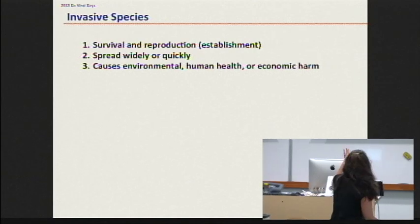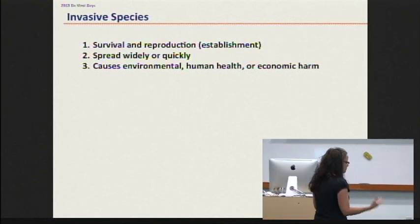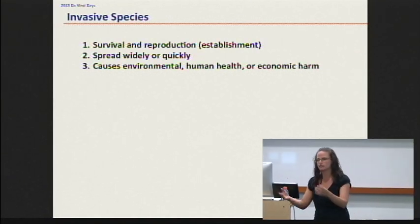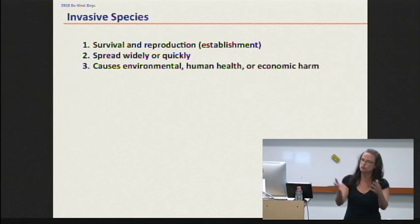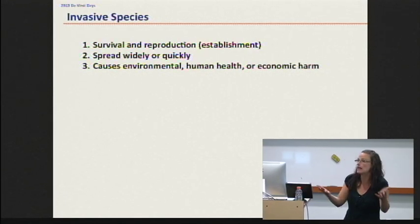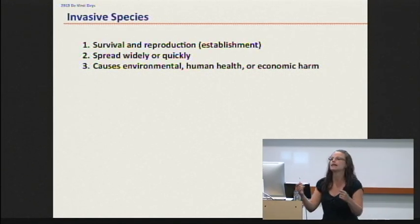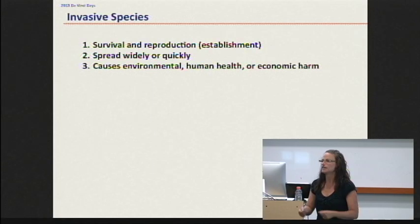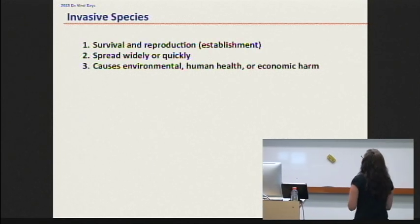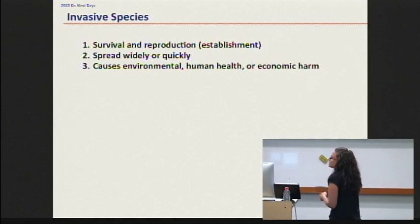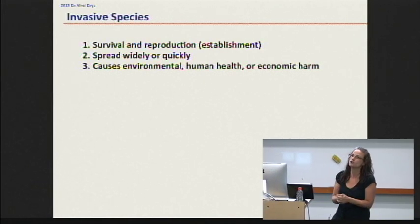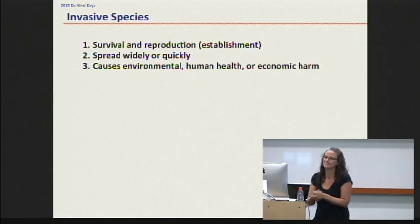The first thing is that the species needs to be surviving and reproducing in its new habitat — it's been artificially moved, either intentionally or unintentionally, into this new novel habitat. Can it survive? Can it establish? Can it reproduce? That's the first thing. The second thing is it needs to be spreading, and not just slowly, but quickly. That's a tough thing for a species that did not evolve in this system.